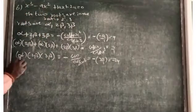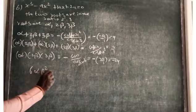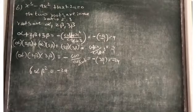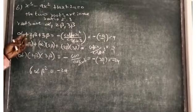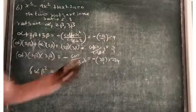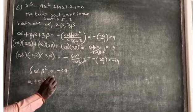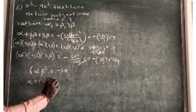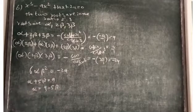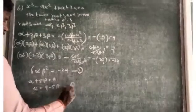From the sum of roots: 2 beta plus 3 beta gives 5 beta, so alpha plus 5 beta equals 9. Therefore, alpha equals 9 minus 5 beta. We take this as equation 2, and the product equation 6 alpha beta squared equals minus 24 as equation 1.